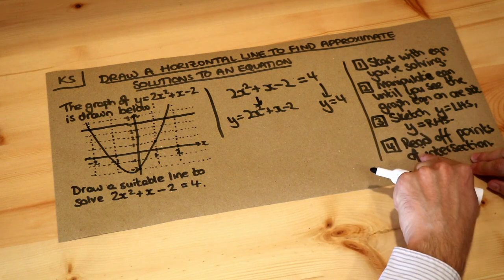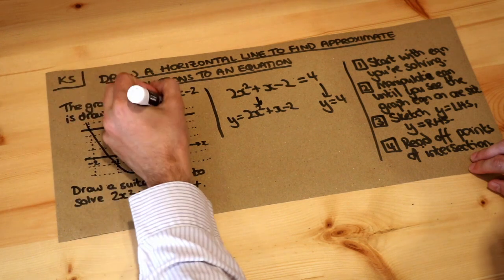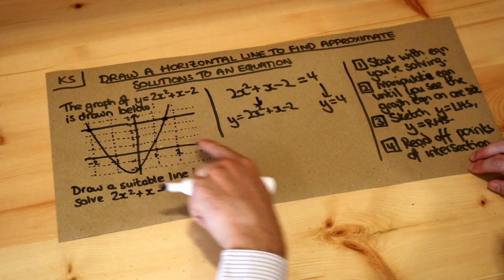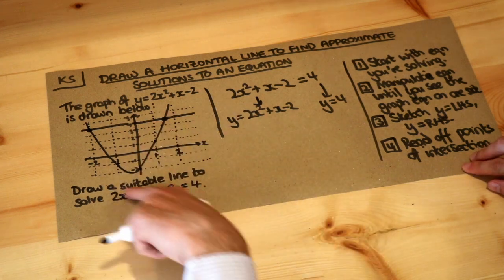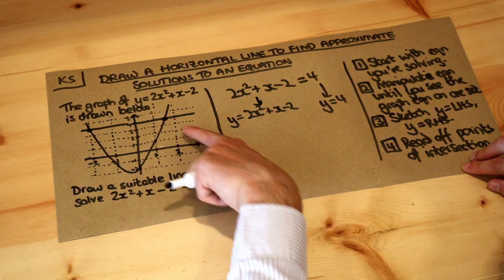So now we just need to do the last step which is to read off the points of intersection. We can see these are intersecting these two lines here and here. So if we read the values of x off, because remember we're just solving an equation in terms of x, we don't care about the y value, we just care about the x value.